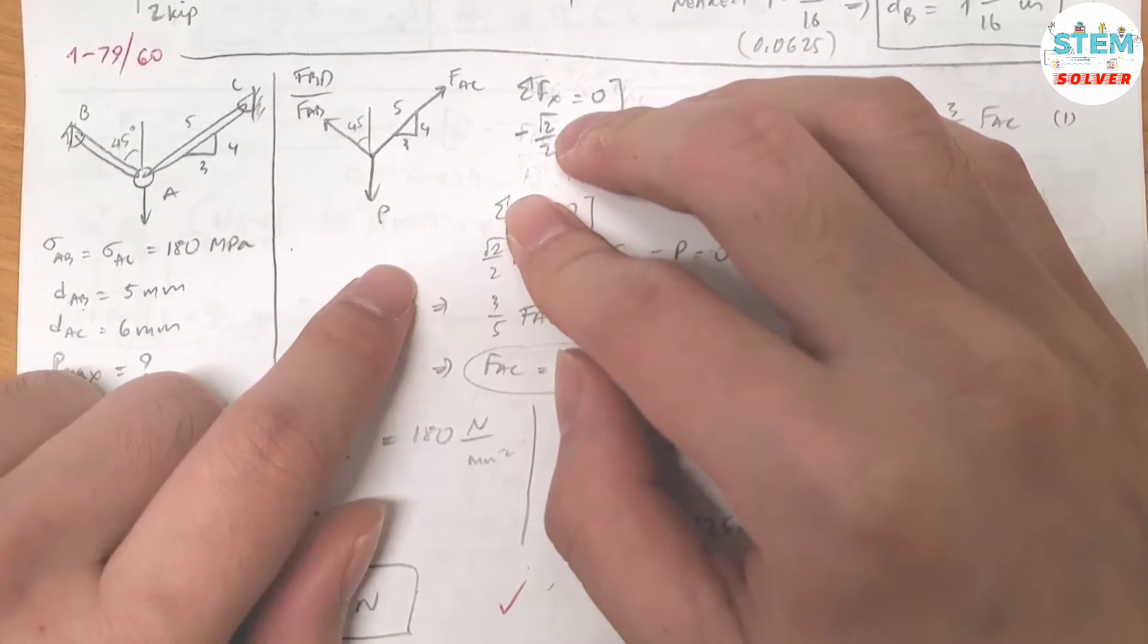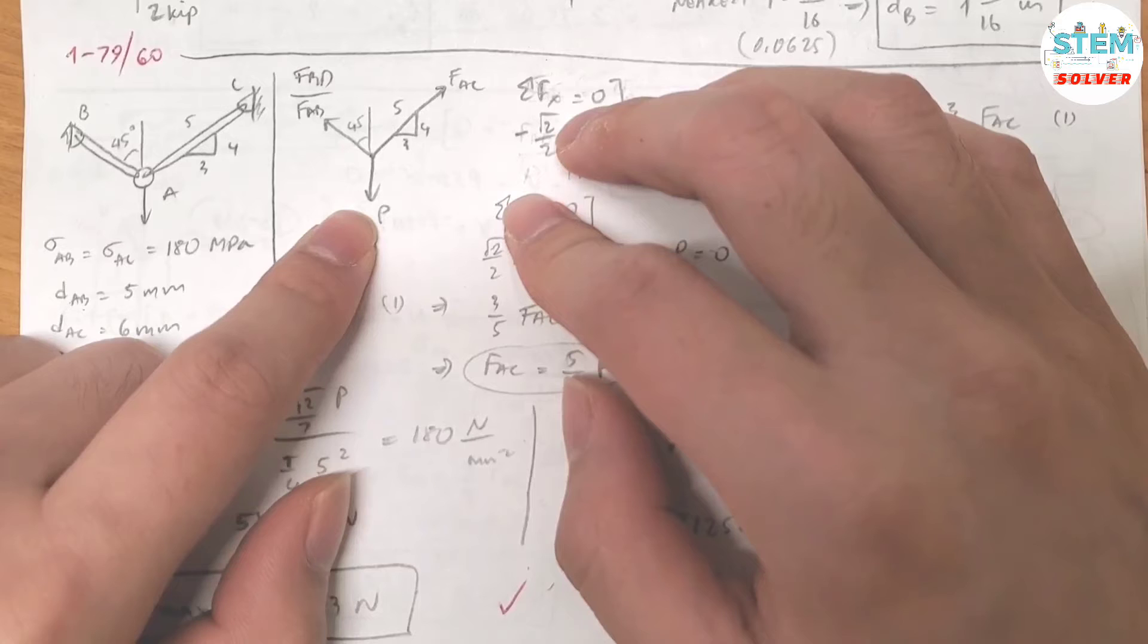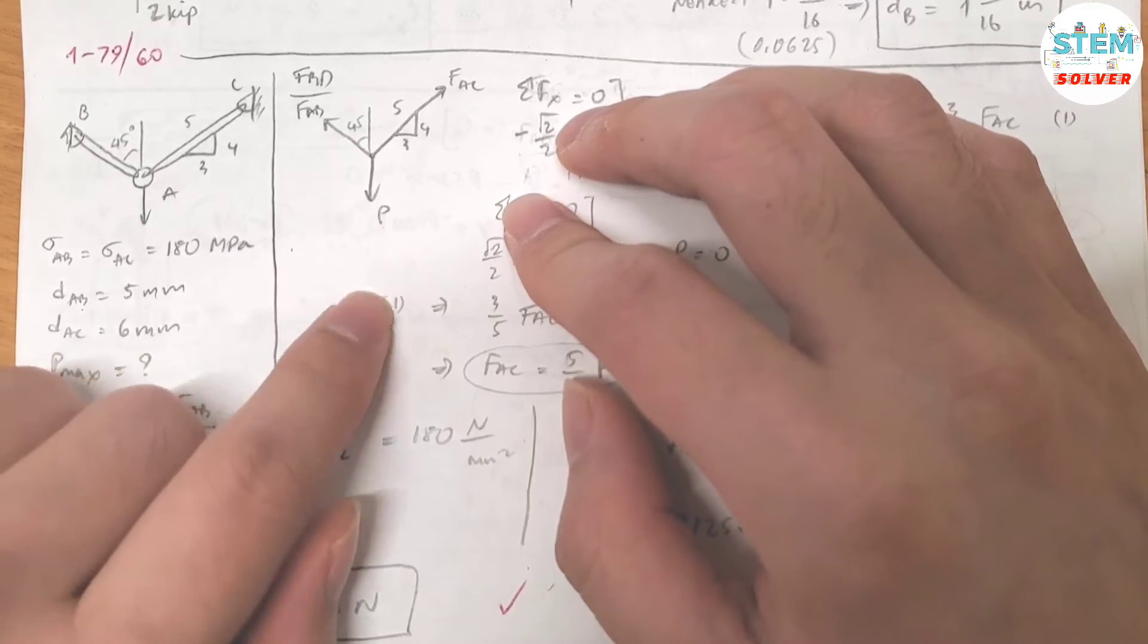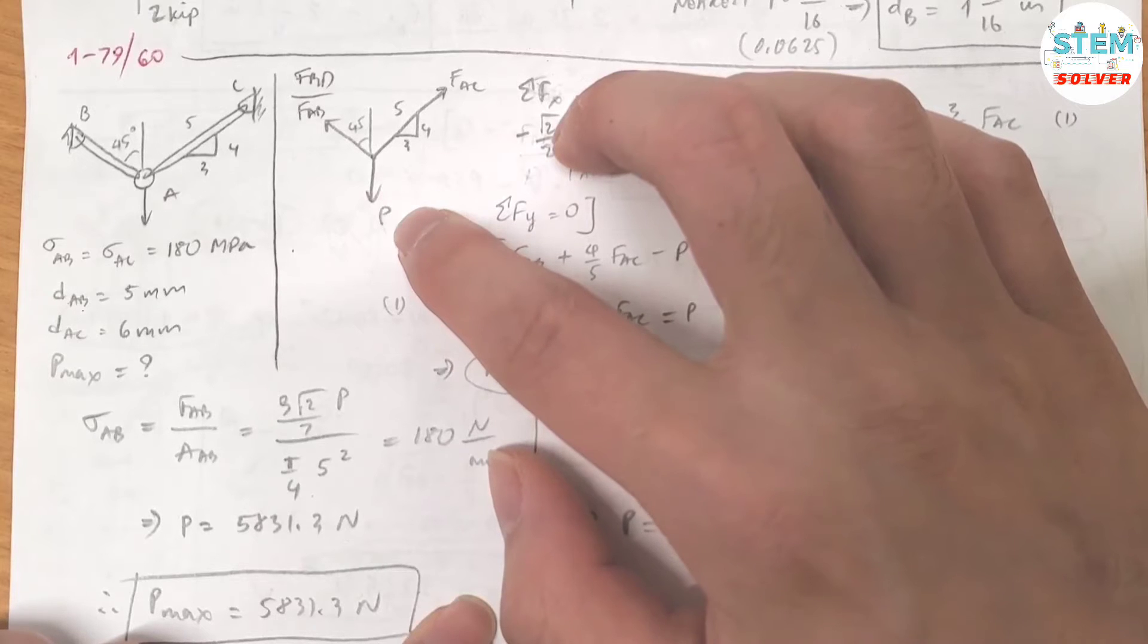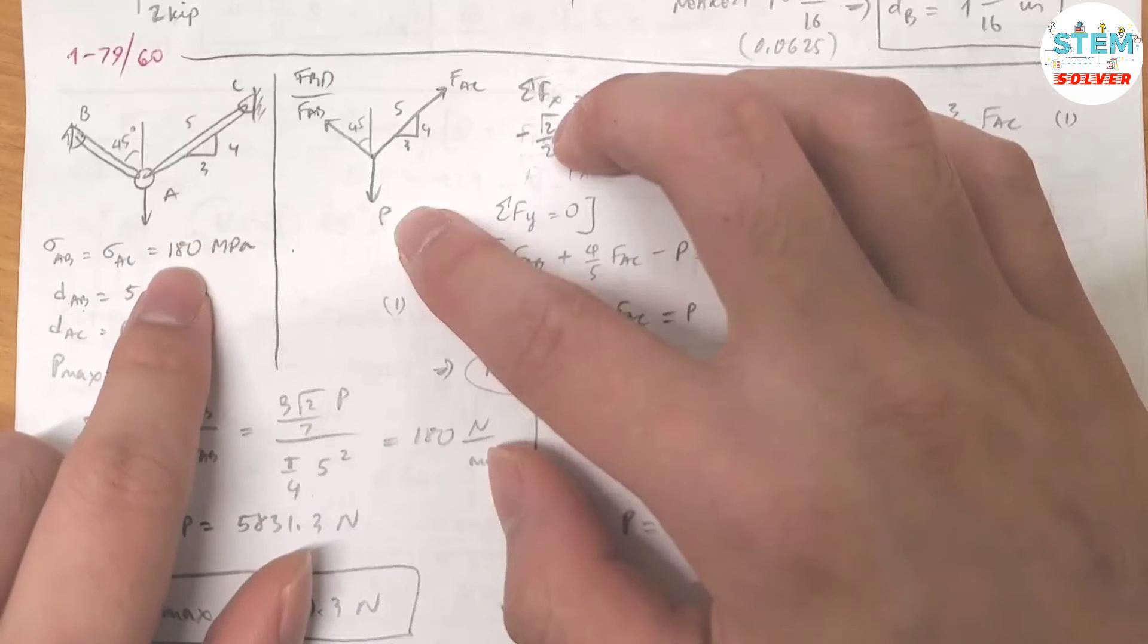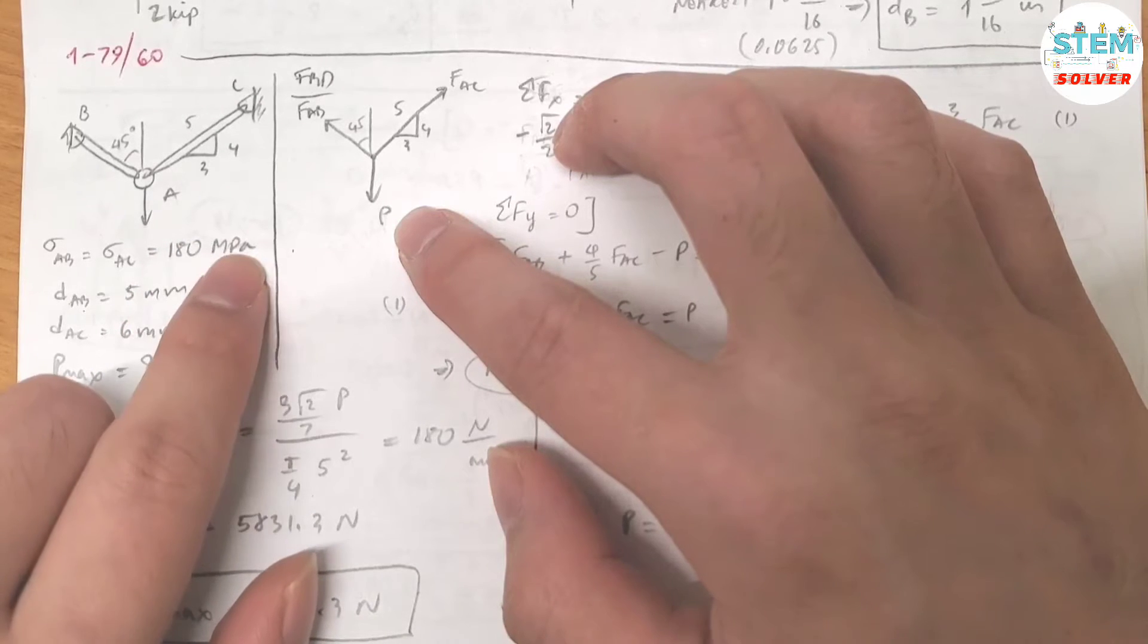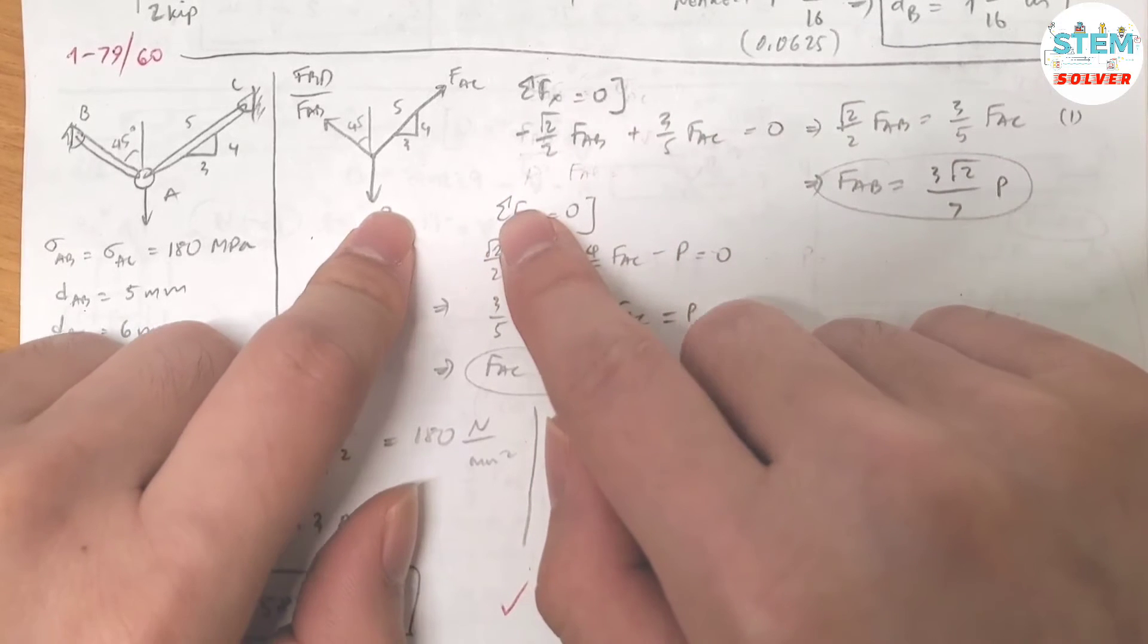First of all, you need to determine what you need to look for. You have to find the maximum force P so that it uses the allowable normal stress of 180 MPa. So first of all, what I did was I took the summation about the x-axis.